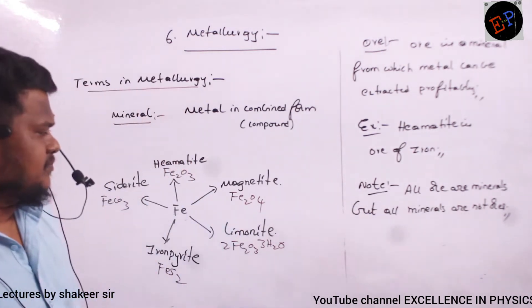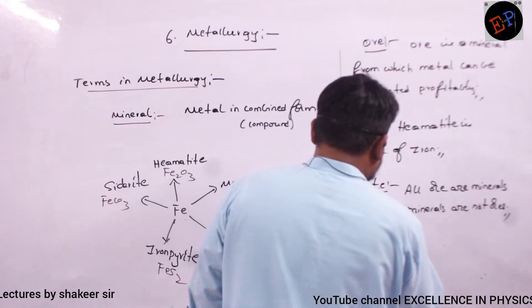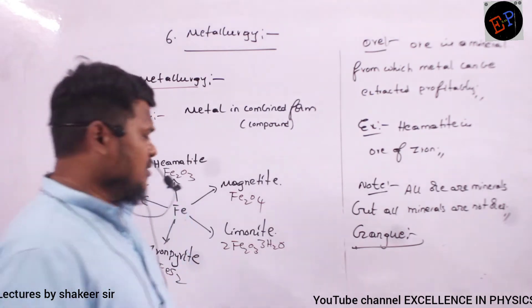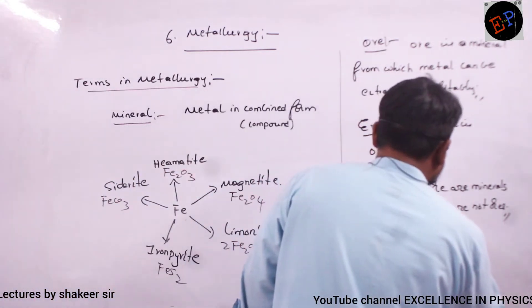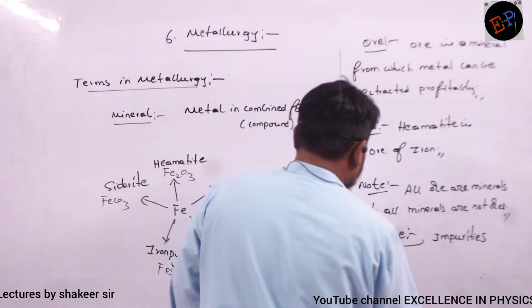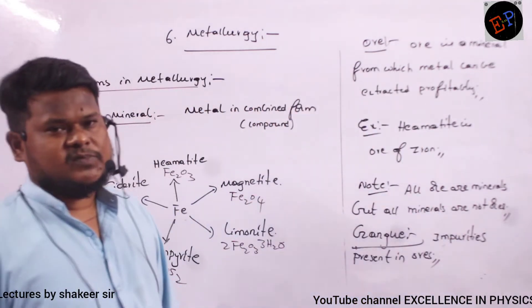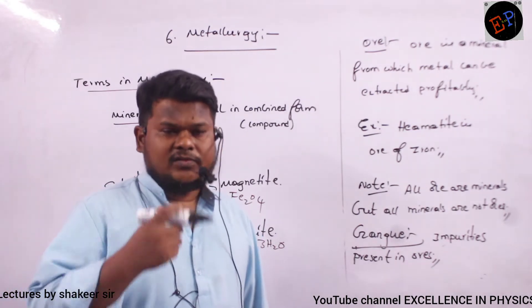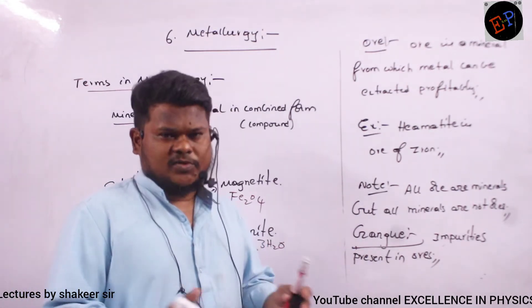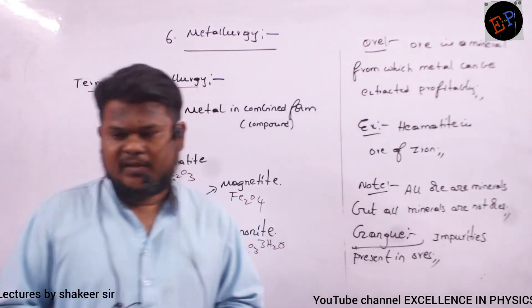One more terminology is gangue (G-A-N-G-U-E). Gangue is the impurity present in ores or minerals. For example, hematite as found in nature is not purely hematite — some sand and soil are mixed with it. All the impurities present in the ore are called gangue.